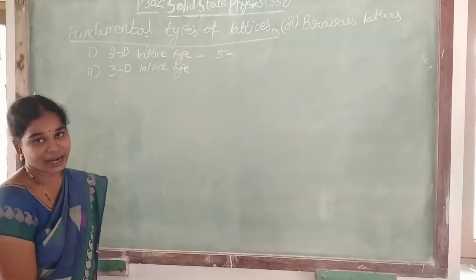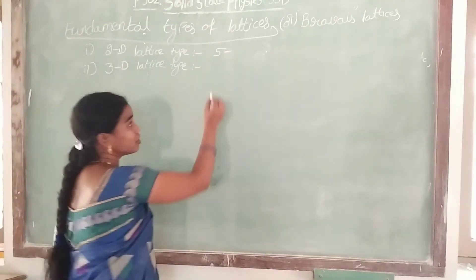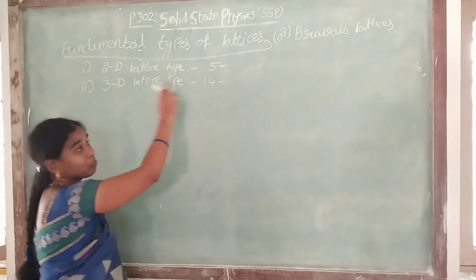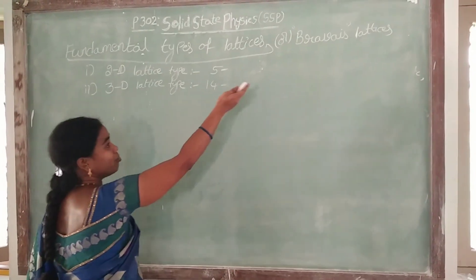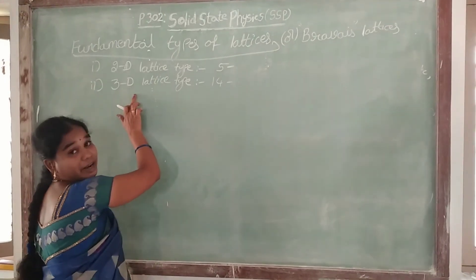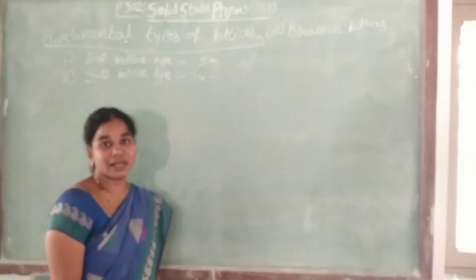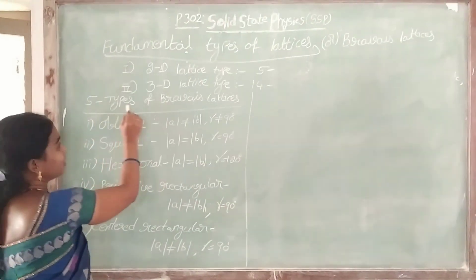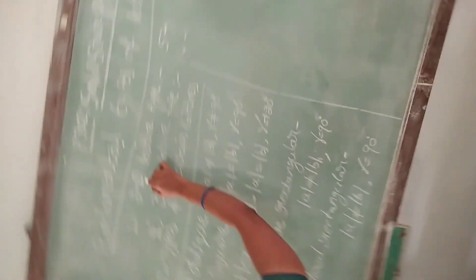For three-dimensional lattice types, we have fourteen Bravais lattices in three dimensions. Fourteen types of Bravais lattices. Now, the five types of Bravais lattices in two-dimensional lattices are as follows.